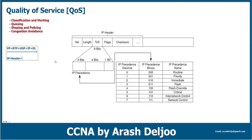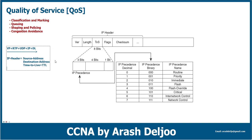In the IP header we have fields we've used until now — for example, the source address and destination IP. We also learned about the Time to Live field or TTL, and some other fields. In the IP header we have one field called TOS — Type of Service. As you can see, TOS has eight bits in length — eight bits or one byte.